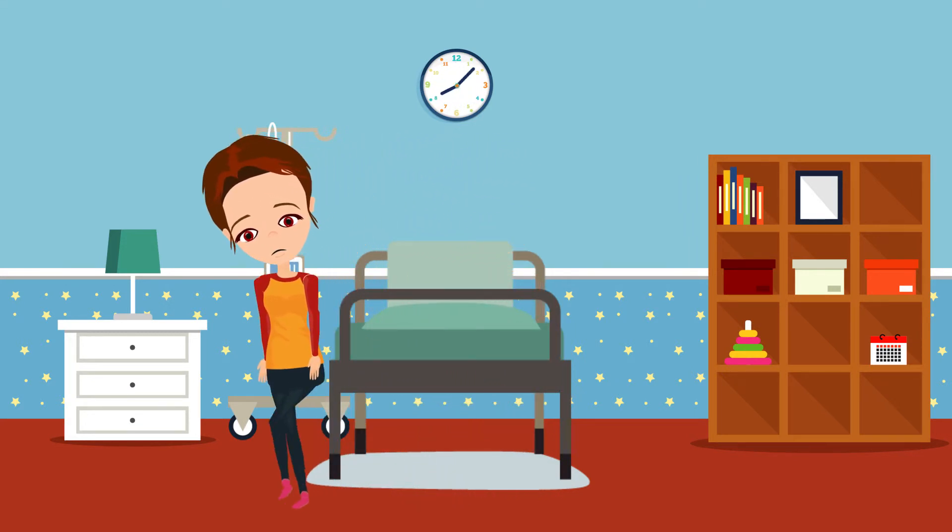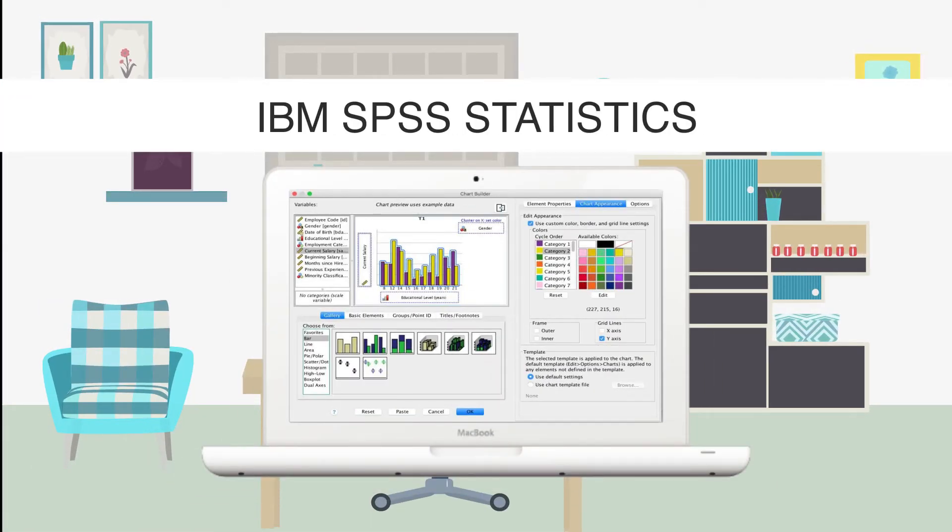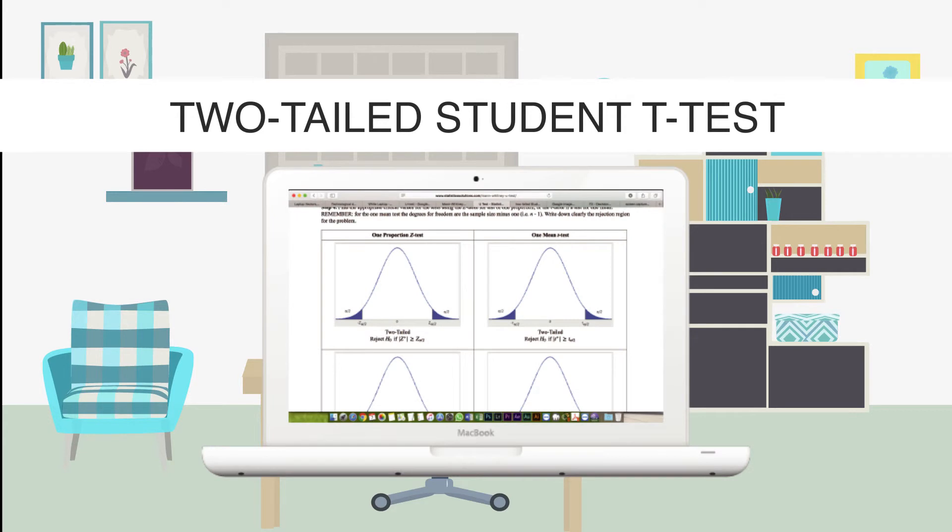The statistical program IBM SPSS Statistics version 18.0 was used to conduct analysis between the two groups. The Mann-Whitney U test was used to analyze demographic data, and two-tailed Student's t-test to analyze morphine consumption and pain assessment by numerical rating scale.